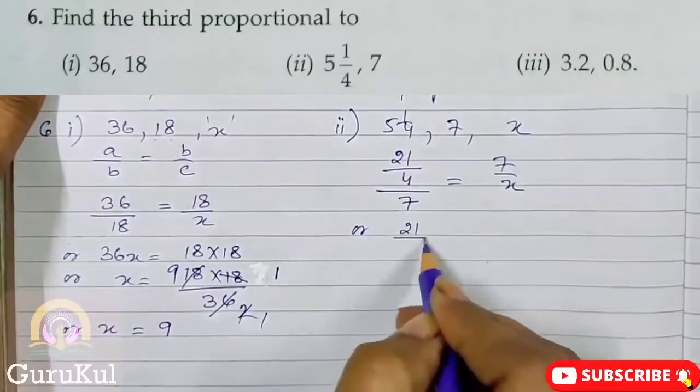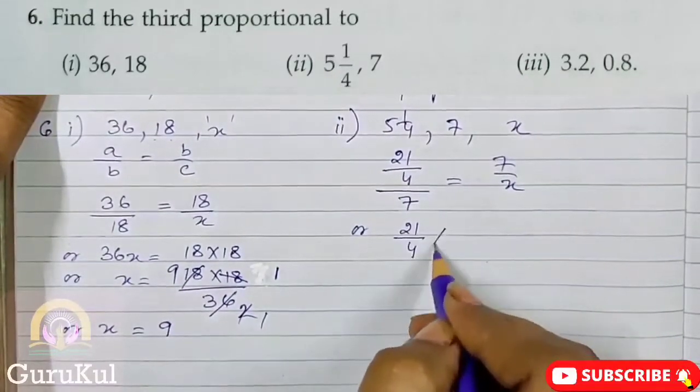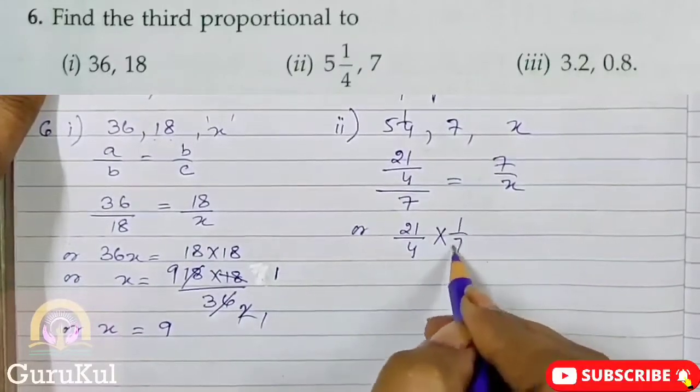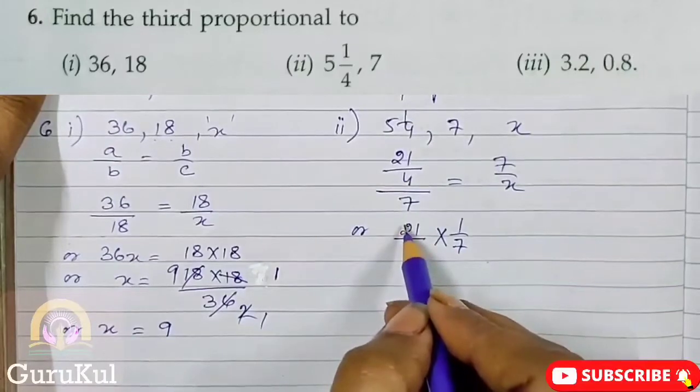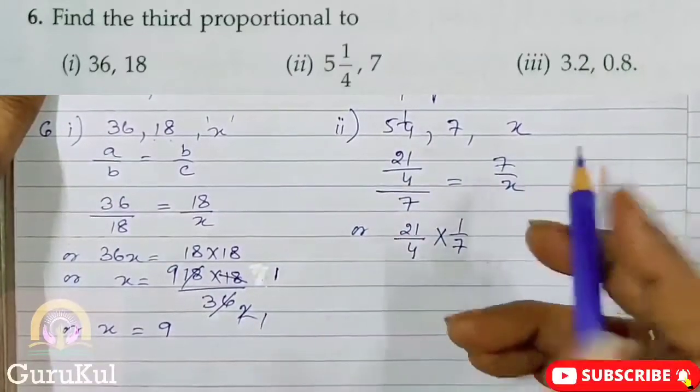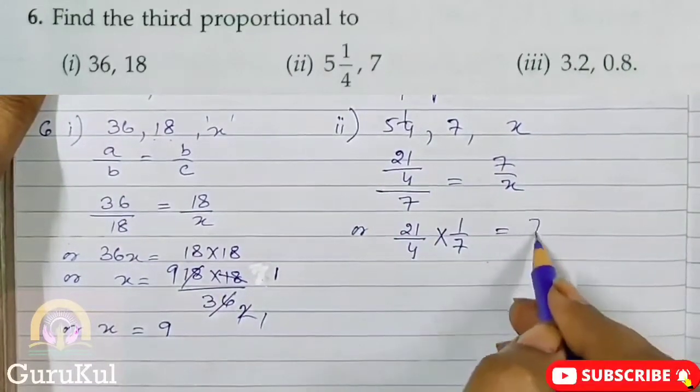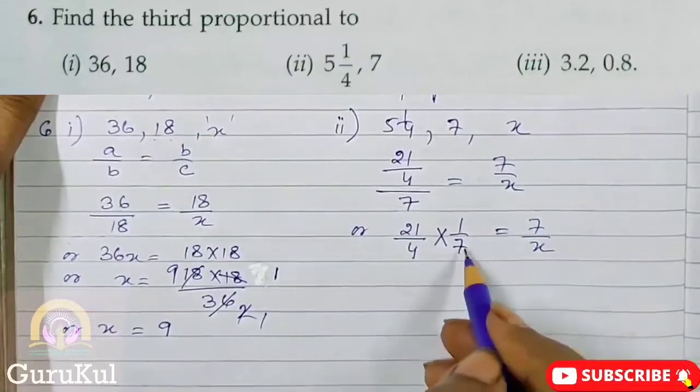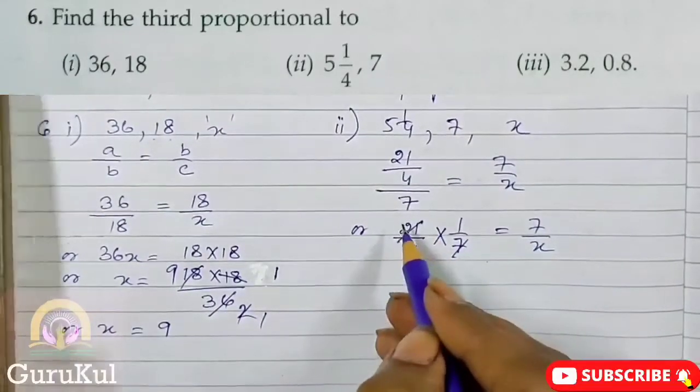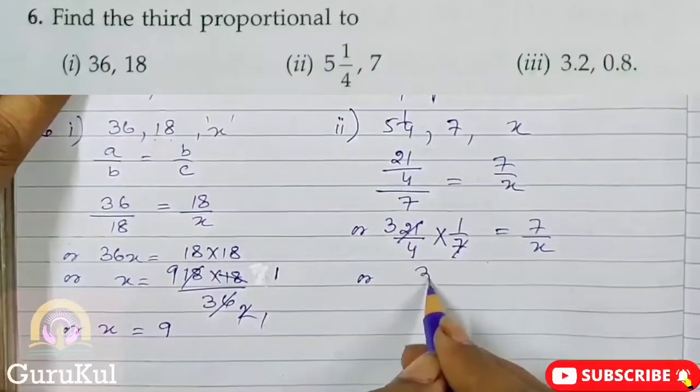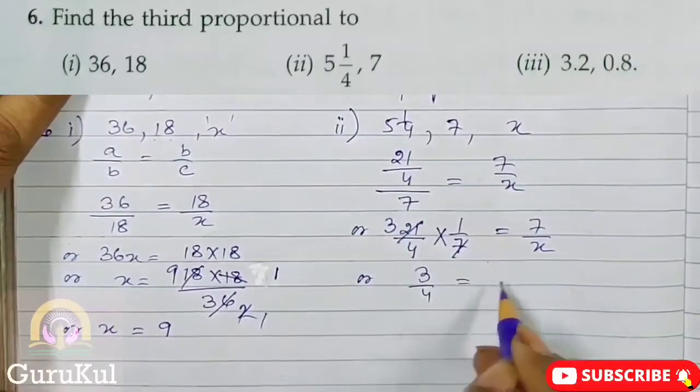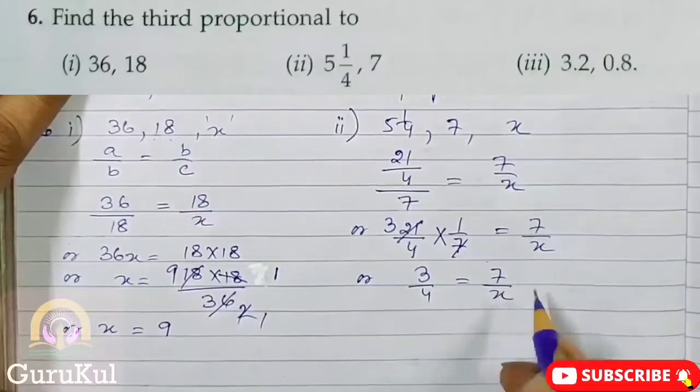Or, 21 by 4 into 1 by 7. Remember, this 7 has 1 below it, so it becomes reciprocal. Is equal to 7 by X. So 7 ones are 7, 3 sevens are 21. Or, 3 by 4 is equal to 7 by X.